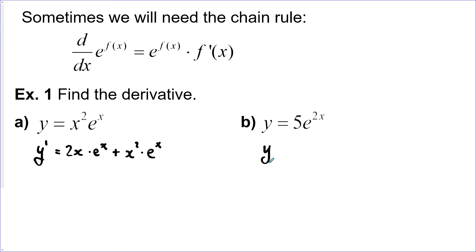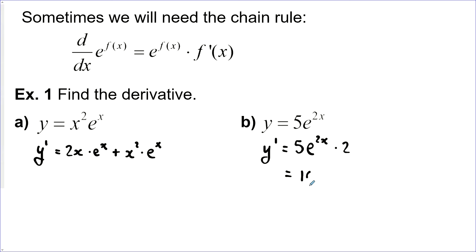Next one: y prime is equal to 5 times the derivative of e to the power of 2x, which is e to the power of 2x times the derivative of 2x, which is 2. So this one cleans up as 10e to the power of 2x.